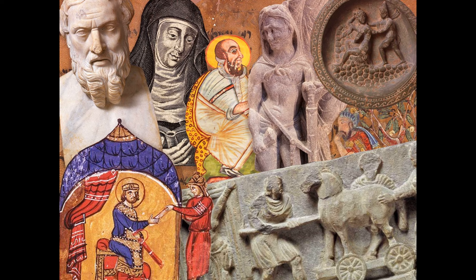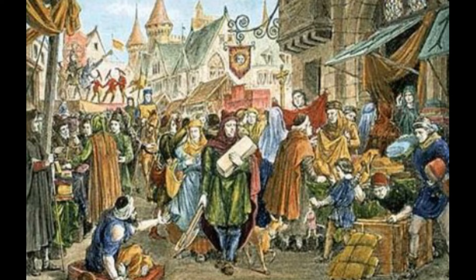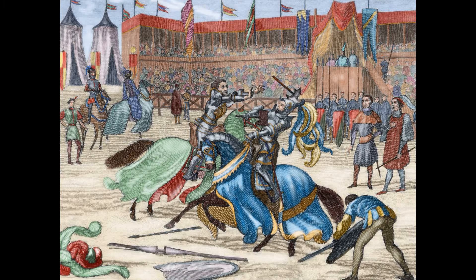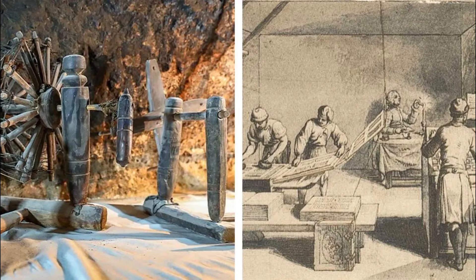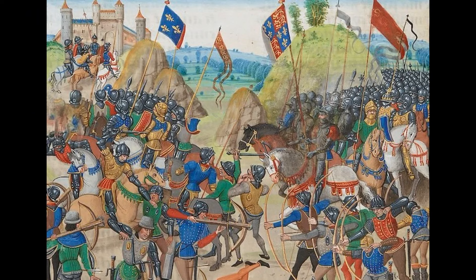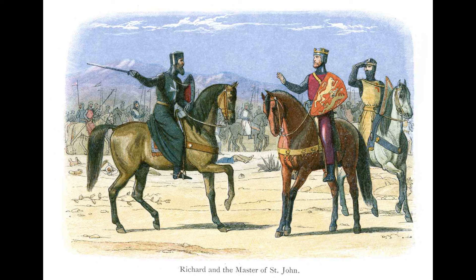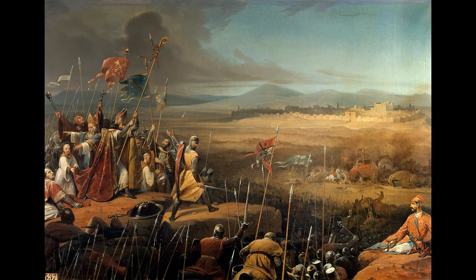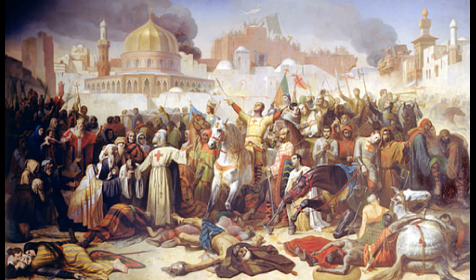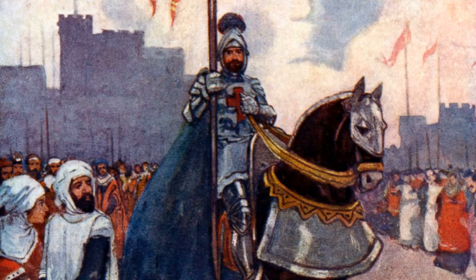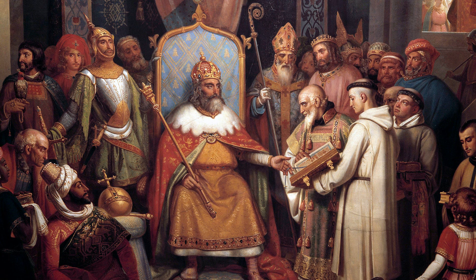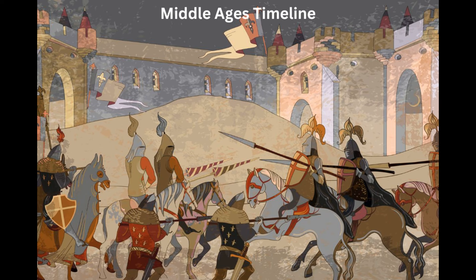Despite the political and social instability, the Middle Ages saw significant cultural and intellectual achievements. The era witnessed the rise of medieval literature, art, architecture such as Gothic cathedrals, and the founding of universities. Scholars like Thomas Aquinas and philosophers of the scholastic tradition made important contributions to medieval thought. The Crusades — a series of religious wars sanctioned by the Church — were launched to reclaim the Holy Land from Muslim control, and had significant social, economic, and political impacts on Europe, including the expansion of trade and cultural exchange with the East. The medieval feudal period was a complex and dynamic era, marked by feudalism, political fragmentation, religious influence, and cultural achievements, and it laid the groundwork for the development of modern European states and institutions.